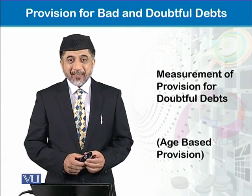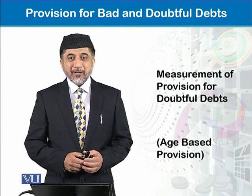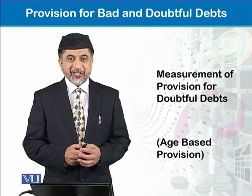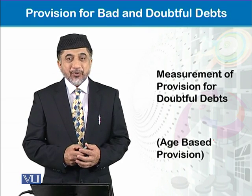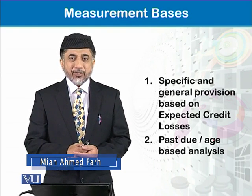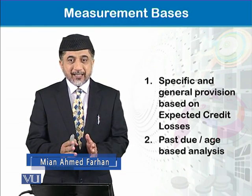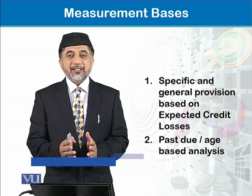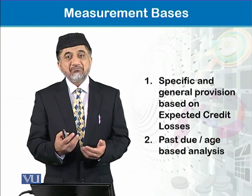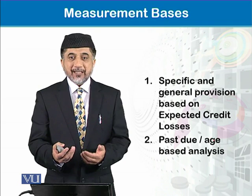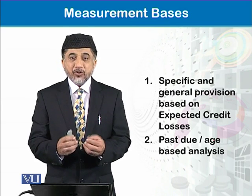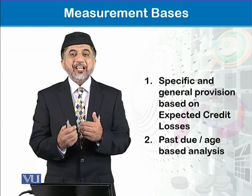We are discussing measurement for the provision for bad and doubtful debts. In this module we will discuss age debt analysis of accounts receivable, which is also known as aging analysis. We know there are two methods for calculating or measuring provision. One we have already discussed was based on expected credit losses, and now we will be discussing provision measurement based upon aging analysis.